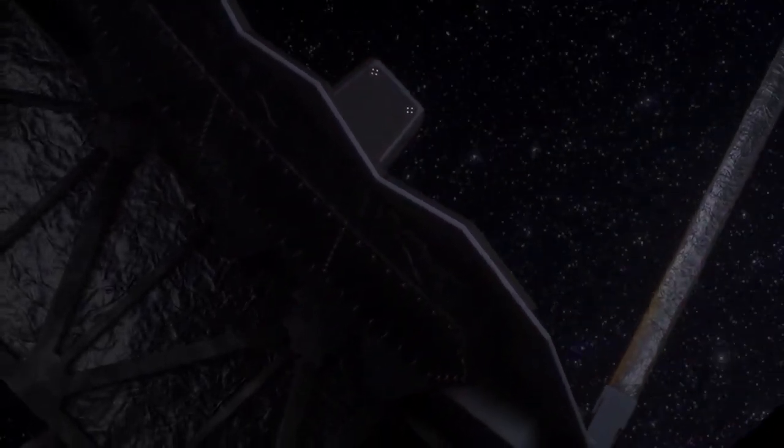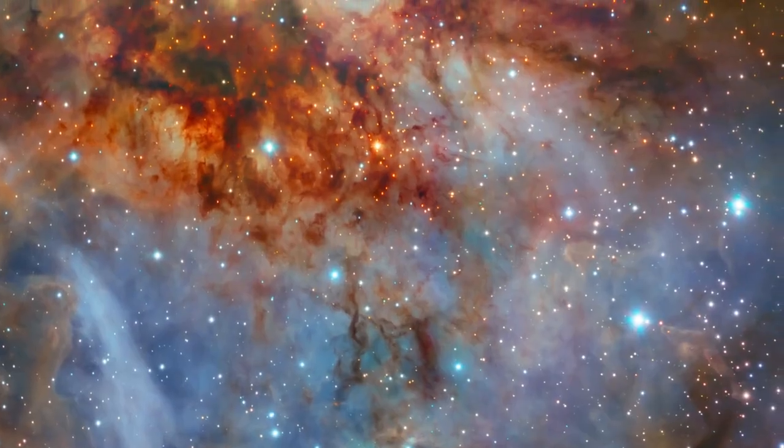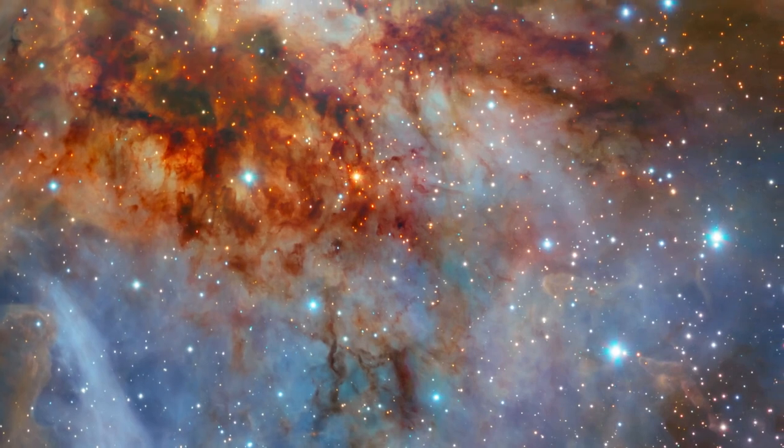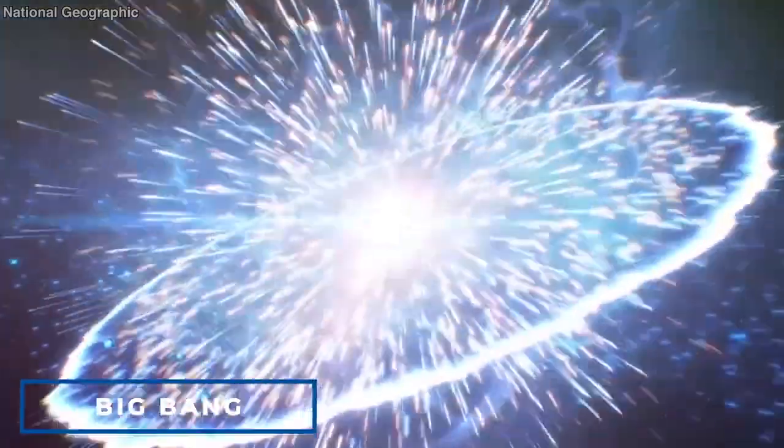The James Webb Space Telescope stands as the largest and most intricate telescope of its kind, equipped with an array of sophisticated instruments. Its primary objective is to delve into the hidden depths of our universe, peering into the faint light emitted by early stars and galaxies that emerged in the aftermath of the Big Bang.